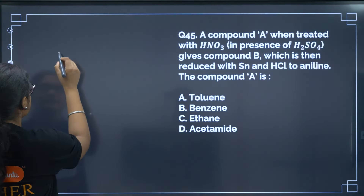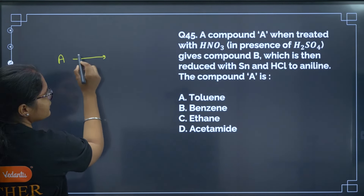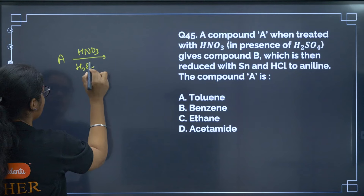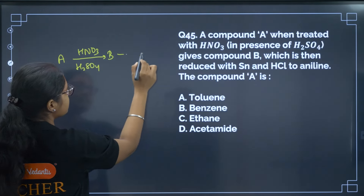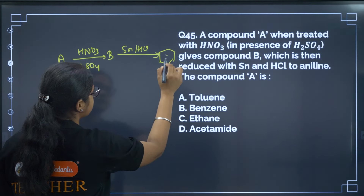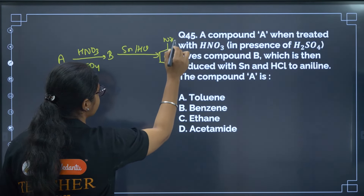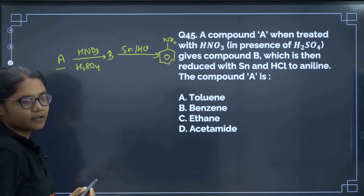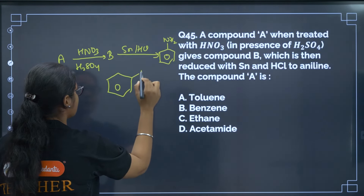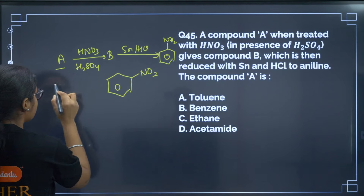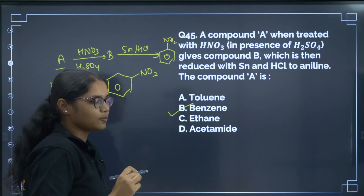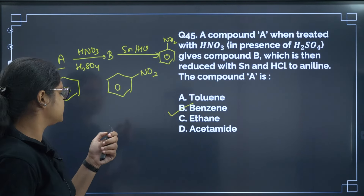Question 45: Compound A is treated with concentrated HNO3 and H2SO4 to give compound B, which is then reduced in the presence of Sn/HCl to give aniline (benzene ring with NH2). Working backwards: nitration of benzene gives nitrobenzene, and reduction gives aniline. So compound A is benzene. Correct answer is option B.